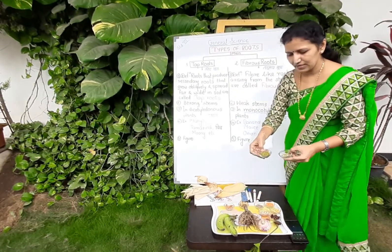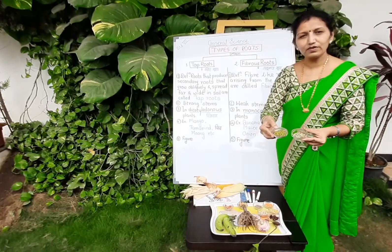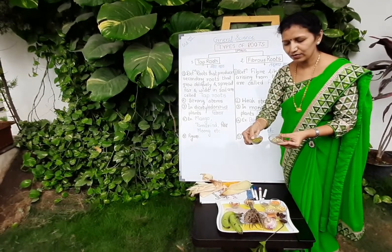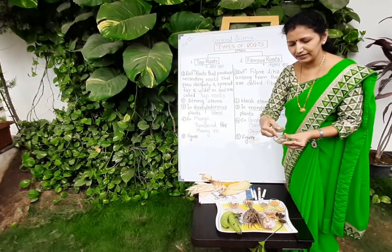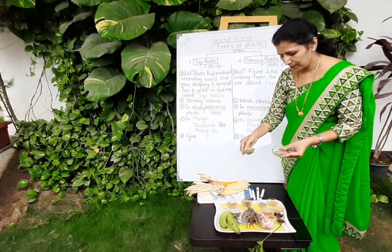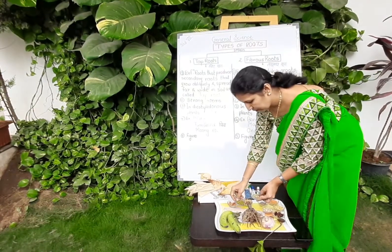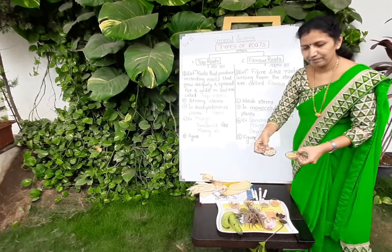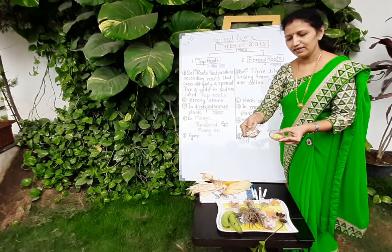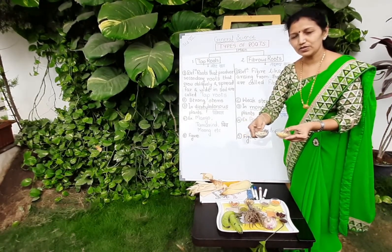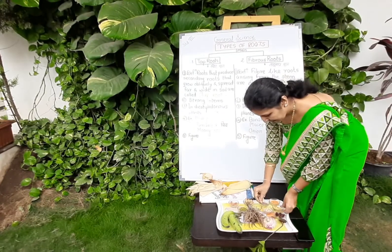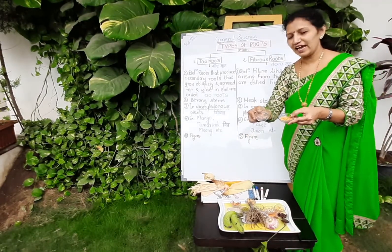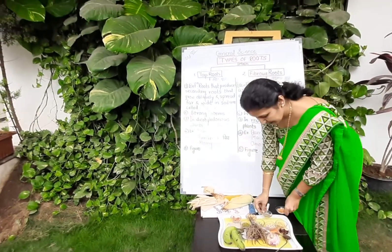Moong is also an example of a dicotyledonous plant. See, these are whole moong and these are the two parts. Then gram, or cherbara, is also dicotyledonous. Then masood is also a dicotyledonous plant.